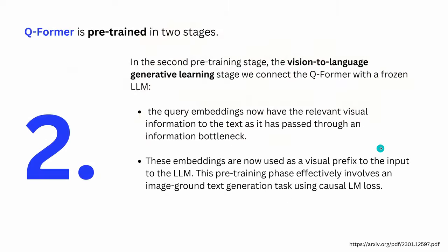In the second stage, we take the Q-Former and connect it to the frozen LLM — in this case Flan-T5 XXL — for vision-language generative learning. The query embeddings now carry relevant visual information relative to the text as they pass through an information bottleneck. These embeddings are used as a visual prefix fed into the large language model.